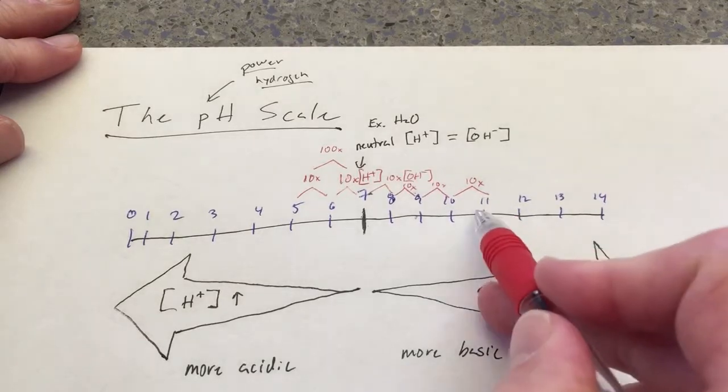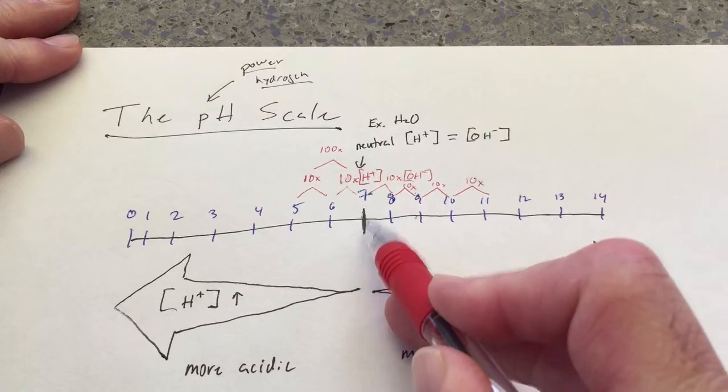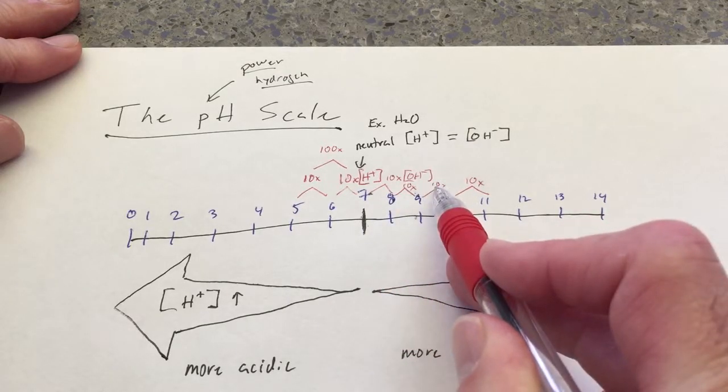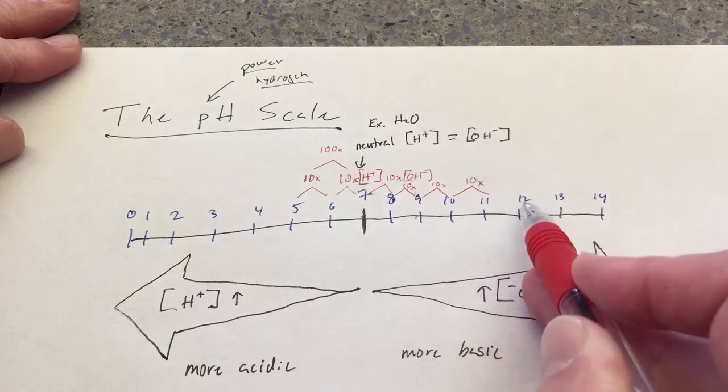How much more basic is something at pH 11 than neutral water? So, 10 times 10 is 100 times 10 is 1,000 times 10 is 10,000.